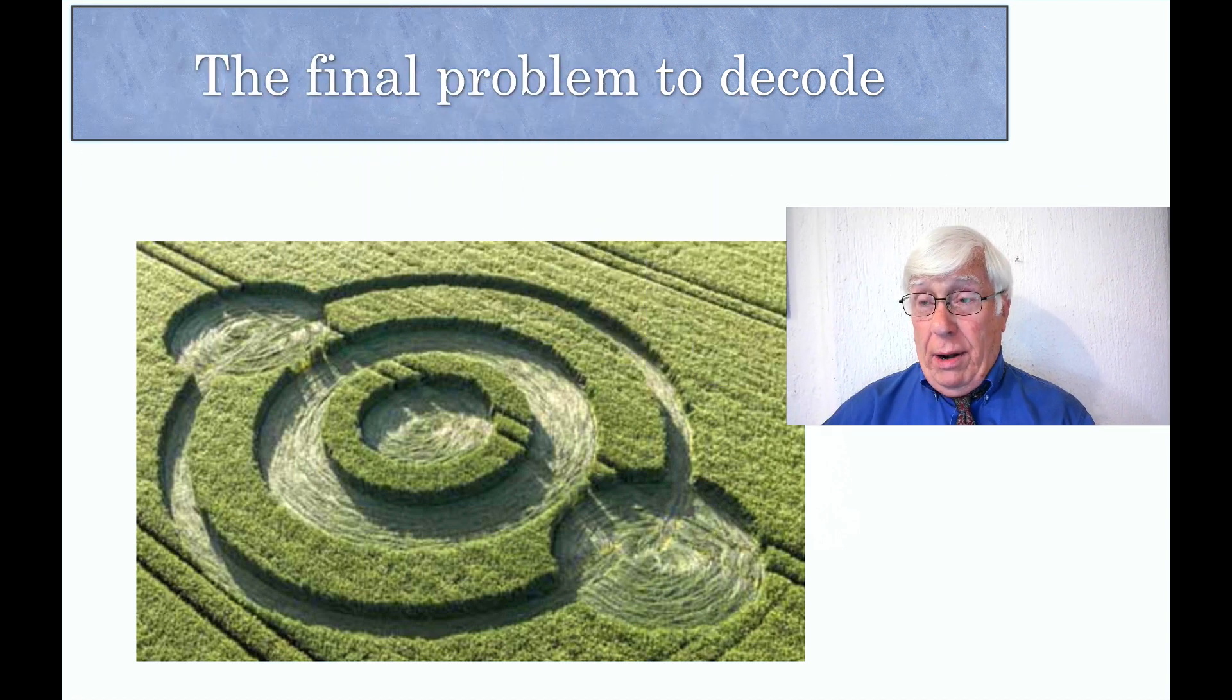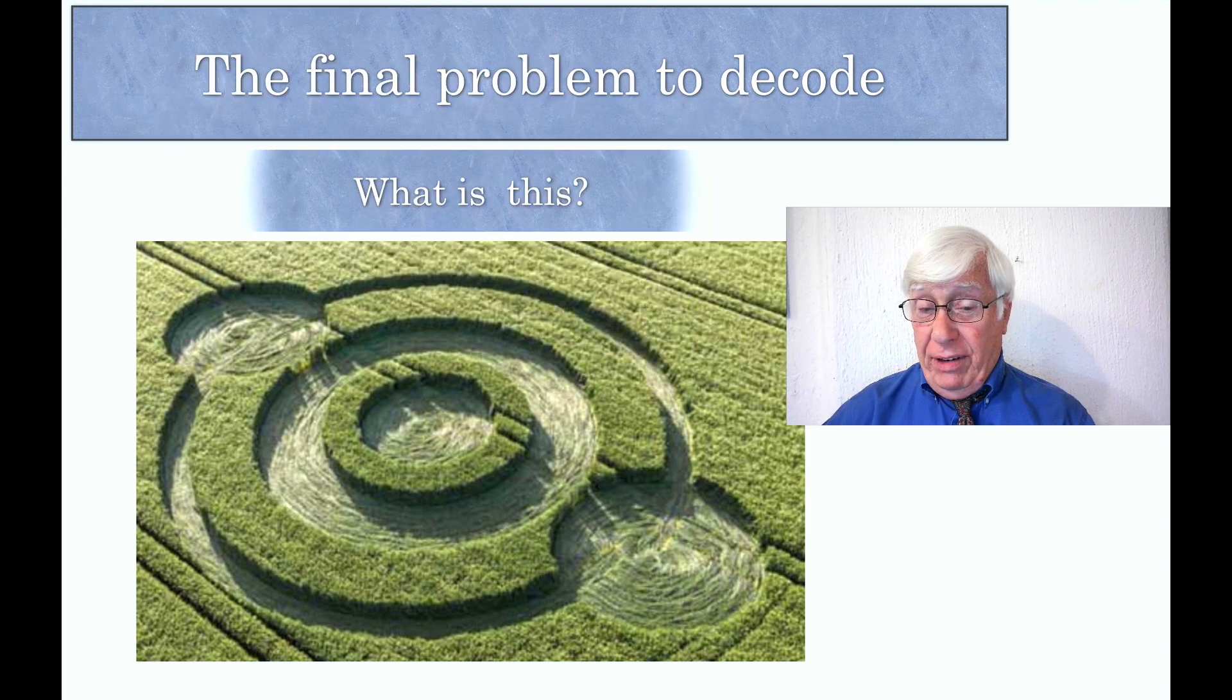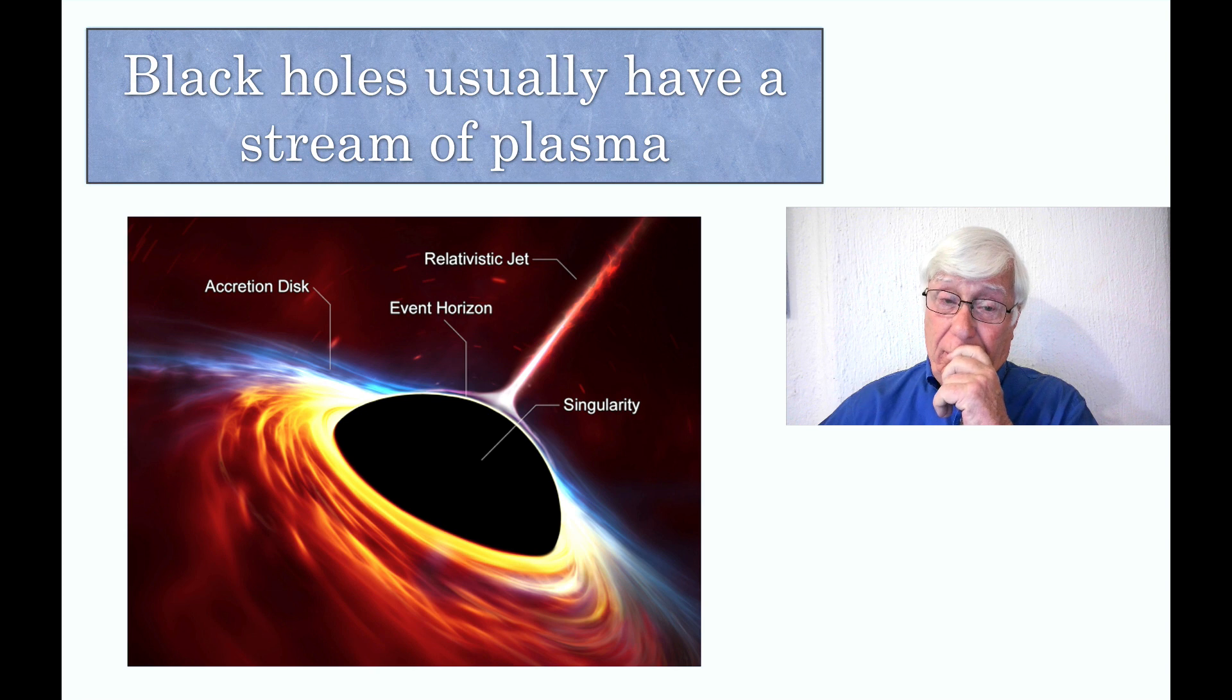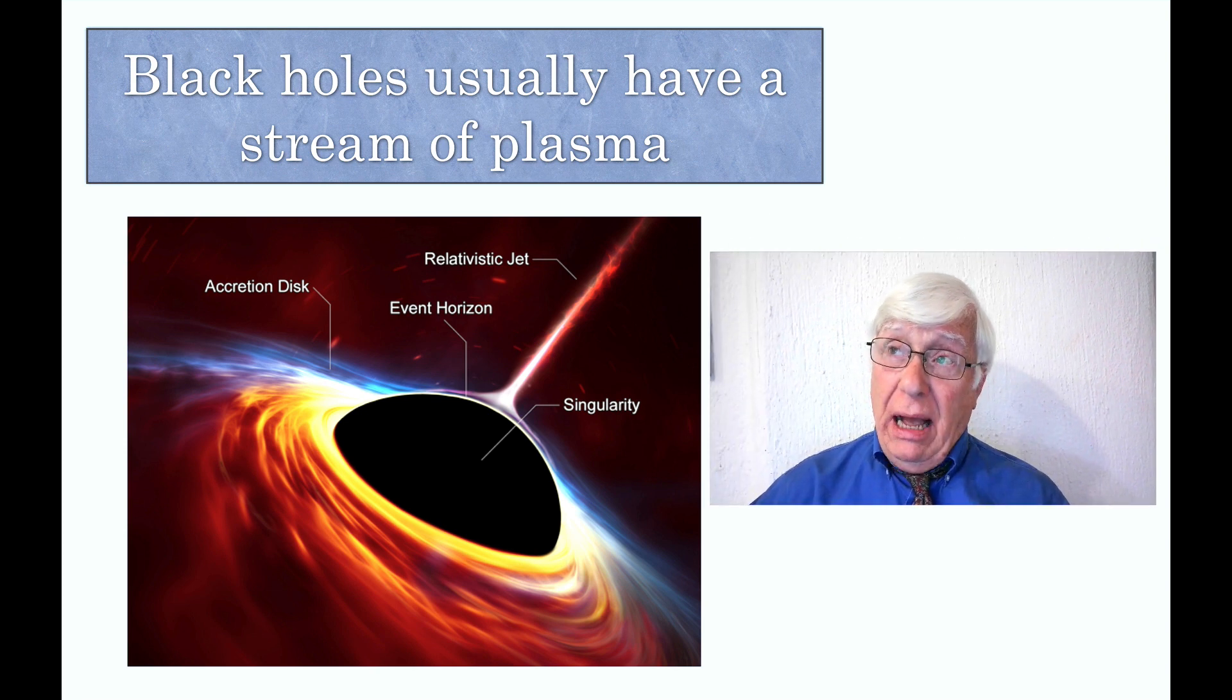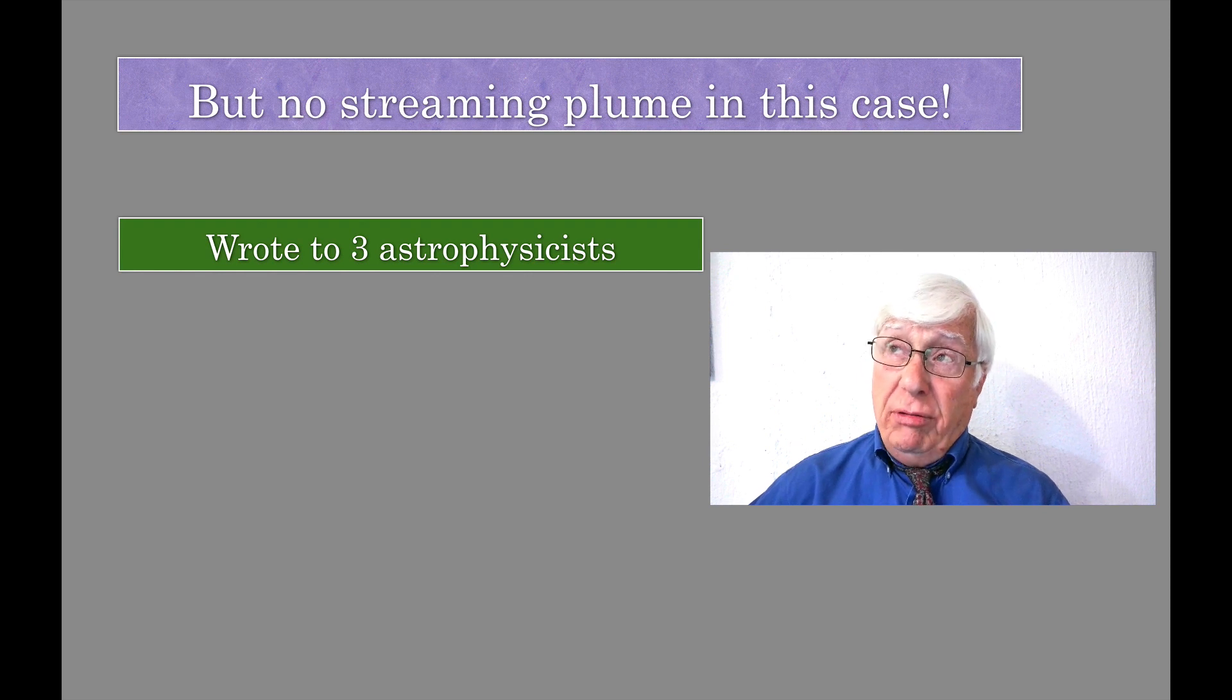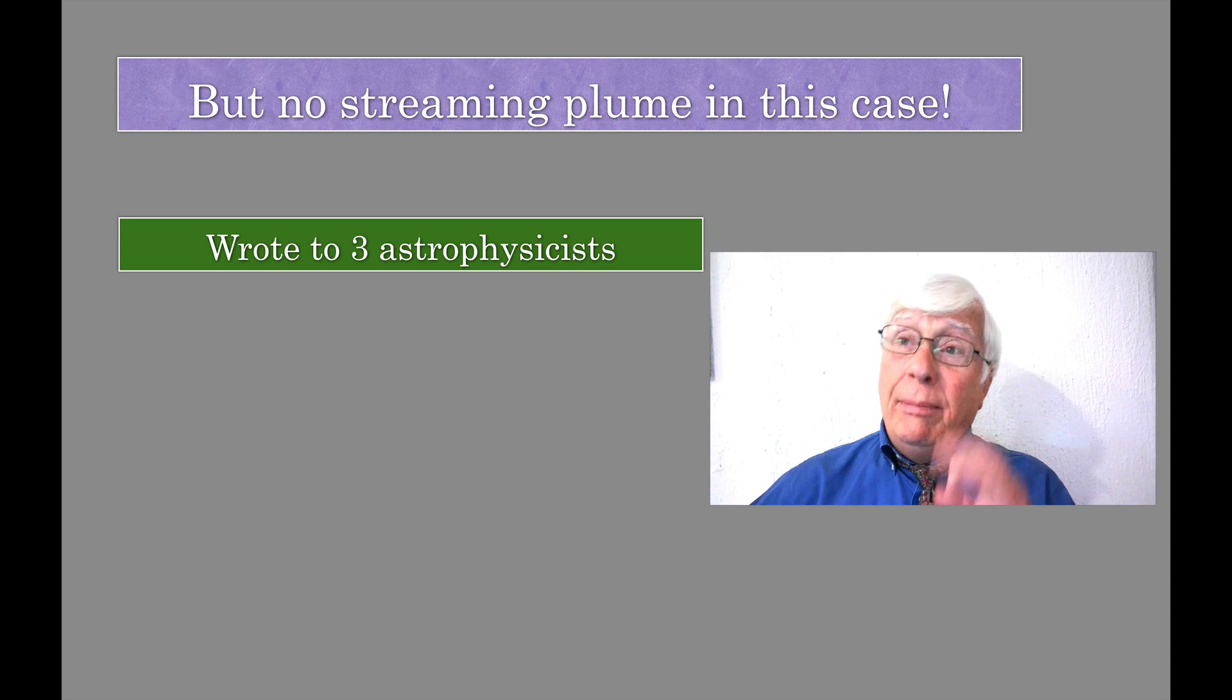But there's still one other issue that we have not figured out, and that is, what the heck is that central circle? Usually, a black hole has a stream of plasma shooting out from it, but this one didn't. There was no streaming plume in this case. So I wrote to three astrophysicists and said, was there a jet stream? Was there a plume? Because I'm looking to find out what's the meaning of this central circle. And maybe I'm completely wrong about this crop circle interpretation.